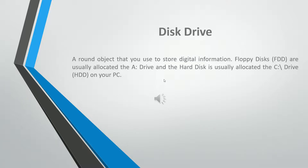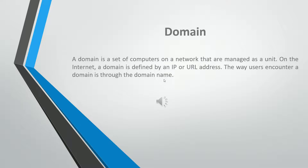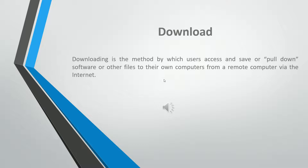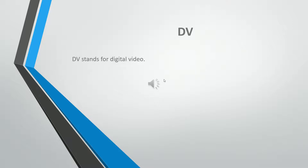A device driver is a small program that allows a peripheral device such as a printer or scanner to connect to your PC. A disk is a round object that you use to store digital information. Floppy disks (FDD) are usually allocated the A drive, and the hard disk (HDD) is usually allocated the C drive on your PC. A domain is a set of computers on a network that are managed as a unit. On the internet, a domain is defined by an IP or URL address. Downloading is the method by which users access and save software or other files to their own computers from a remote computer via the internet. DV stands for digital video.